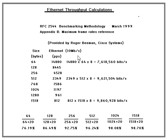In the first example, at 64-byte frames you can only get 14,880 packets per second — or frames per second. When you do the calculations, you actually get about 7.6 megabits per second.